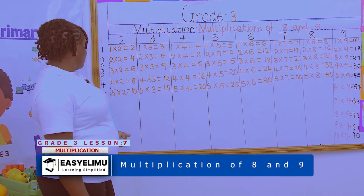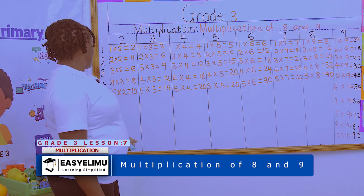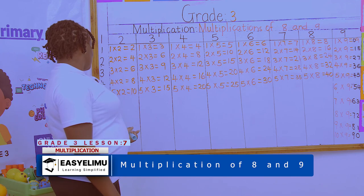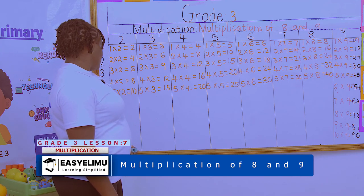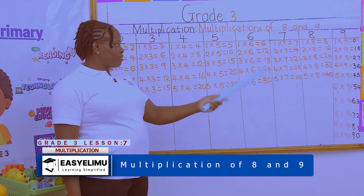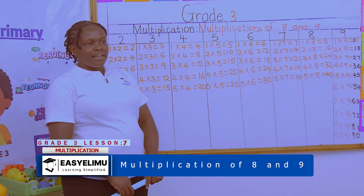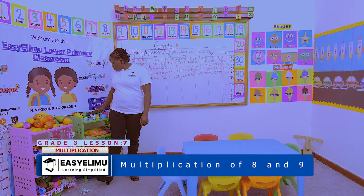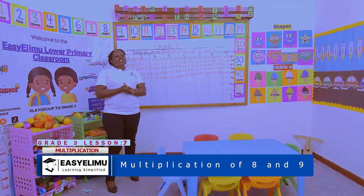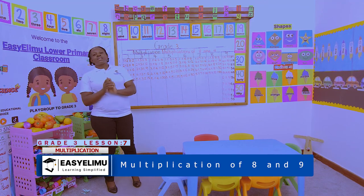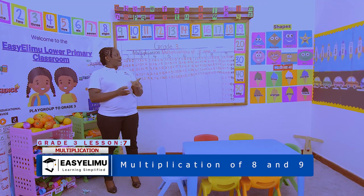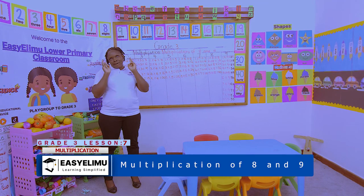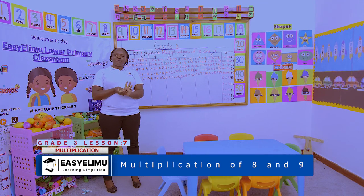I want you to finish the multiplication table for number 6 — for 2, 3, 4 multiplied by 6, 7, 8, 9, 10 — just the way we have done it. Any questions? It was nice having you around and I hope to see you in the next lesson as we complete the multiplication table of number 10. Thank you!